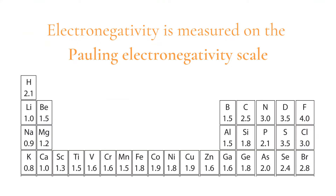Electronegativity is measured on the Pauling electronegativity scale — you don't need to remember the name of this, though. It gives elements a number up to four that represents their electronegativity; the higher the number, the more electronegative they are. Fluorine has an electronegativity of four and is the most electronegative element. Noble gases are not given a value because they are inactive, due to already having a full outer shell and being stable.